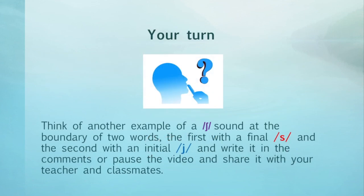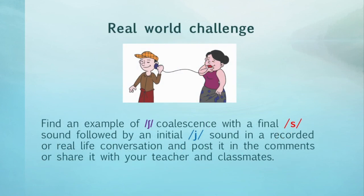Now it's your turn. Think of another example of a SH sound at the boundary of two words — the first with a final S and the second with an initial Y — and write it in the comments, or pause the video and share it with your teacher and classmates. For the real-world challenge, find an example of SH-coalescence with a final S sound followed by an initial Y sound in a recorded or real-life conversation, and post it in the comments or share it with your teacher and classmates.